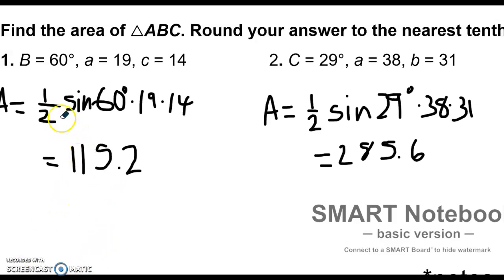The first one would look like this. The formula would be one half the sine of 60 degrees, because that's the angle that we know. We know angle B, and we know side A and C, so that's what we multiply together. Then we just grab a calculator and go one half times sine of 60 times 19 times 14. Be sure you're multiplying those together and you get 115.2. Everyone should try that with their calculators.